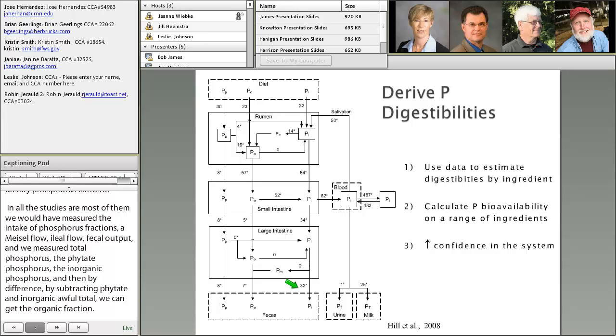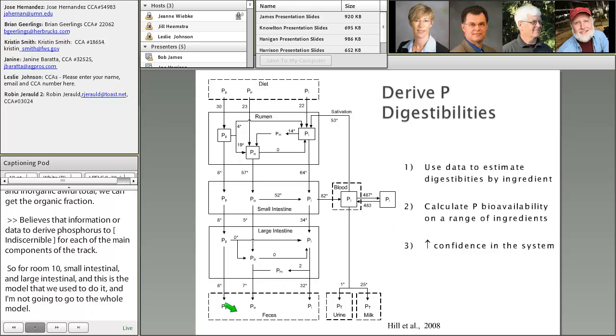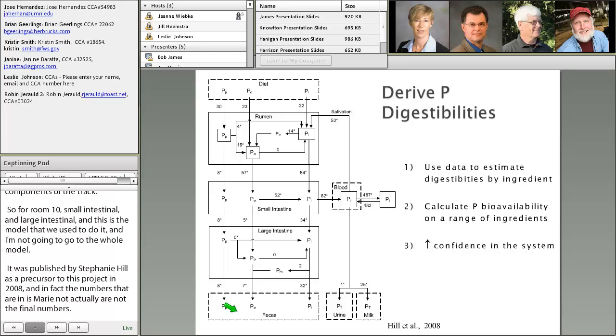We used that data to derive phosphorus digestibility coefficients for each main component of the tract: ruminal, small intestinal, and large intestinal. This is the model we used, published by Stephanie Hill in 2008 as a precursor to this project. The numbers in this model are not the final numbers; these are what we deduced from literature before we started. If you have good memory, you'll notice when I get to final numbers, they've changed dramatically from our thought process at the beginning.